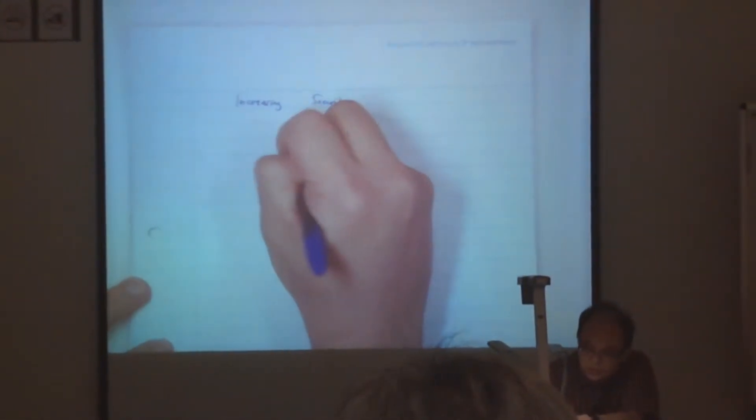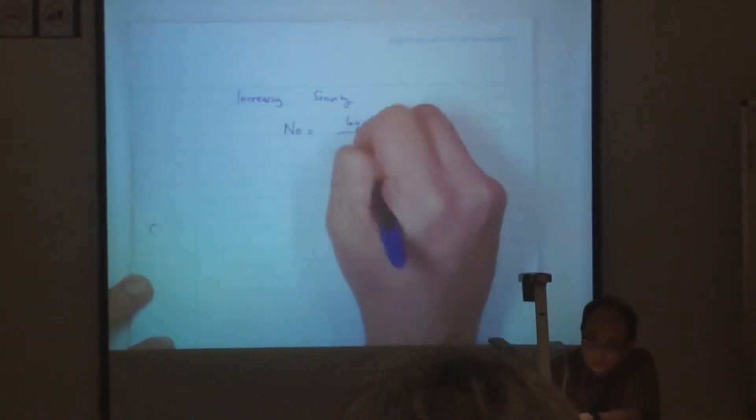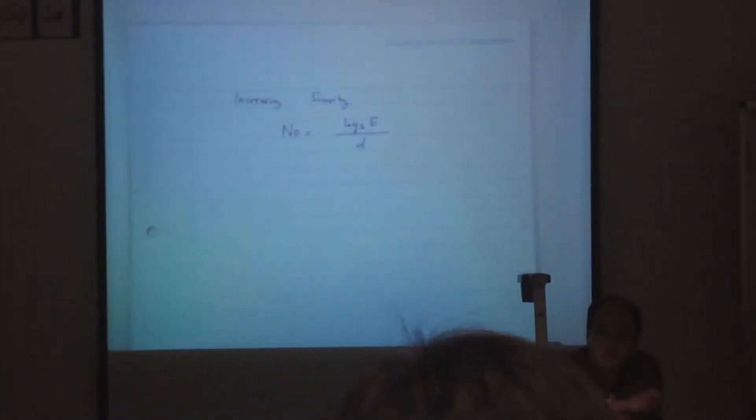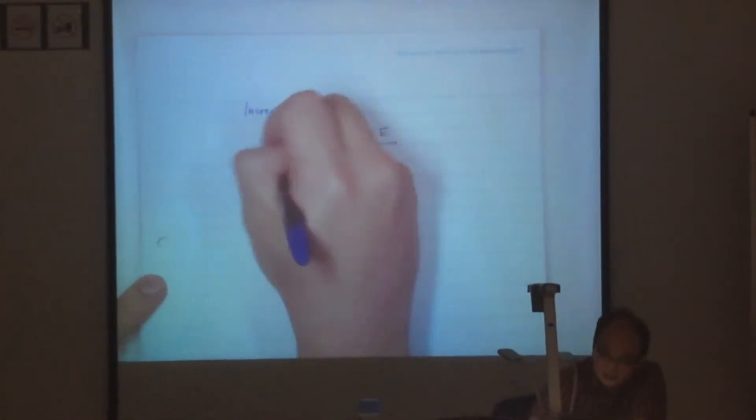The theory is showing here, N0 is log 2 of E divided by G. So what we want to do is we want to increase the security, meaning that we want to increase N0.